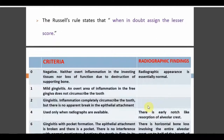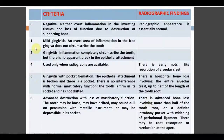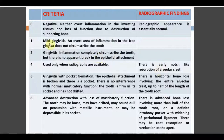For the criteria, we use a normal periodontal probe. Score 0 is given when there is no inflammation in the investing tissue and no loss of function due to destruction, with no change in radiograph. Score 1 is mild gingivitis — overt inflammation in the free gingiva. Score 2 is gingivitis with inflammation completely circumscribing the tooth but no break in epithelial attachment. Scores 0, 1, and 2 have no radiographic findings.